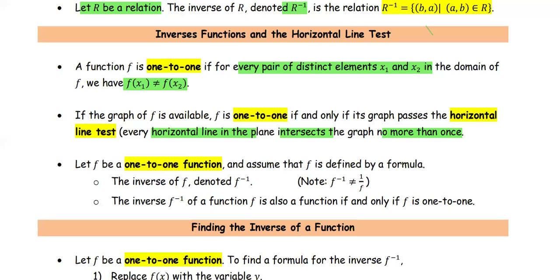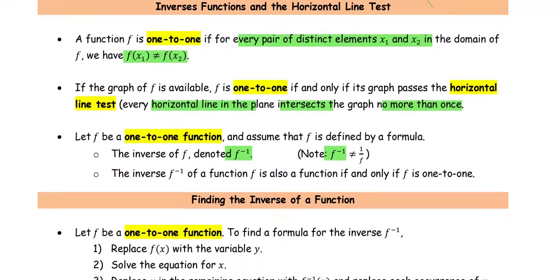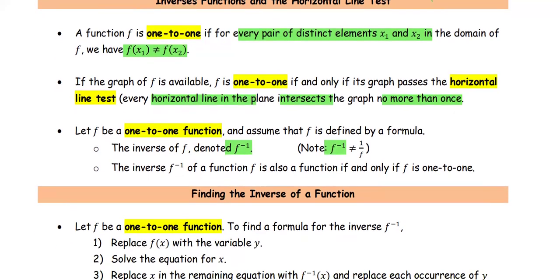Let f be a 1 to 1 function and assume that f is defined by a formula. The inverse of f, denoted by f to the superscript negative 1. Make sure that f to the negative 1 here is not 1 over f or the reciprocal of f. The inverse of f is also a function if and only if f is 1 to 1.